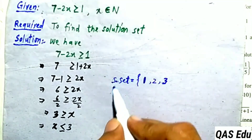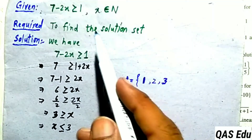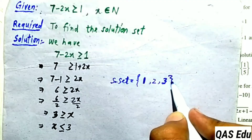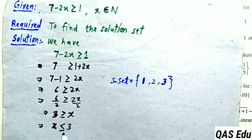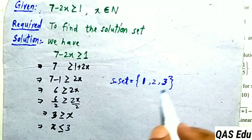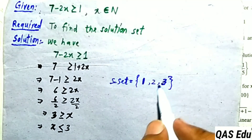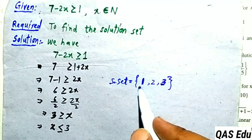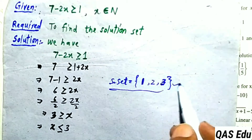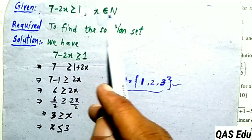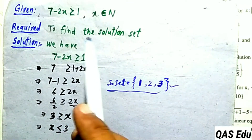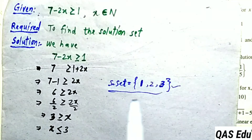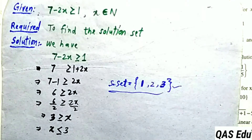Since the restriction is x belongs to natural numbers, the natural numbers less than or equal to 3 are 1, 2, and 3. So the solution set for this inequality with the given restriction is {1, 2, 3}.